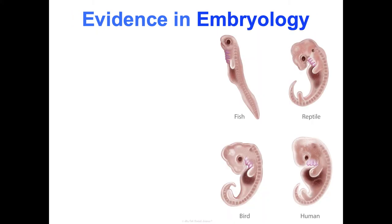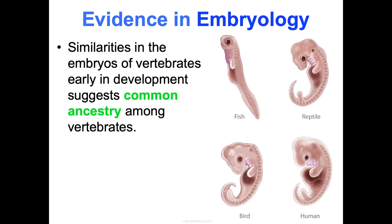Another interesting area is embryology. If we look at the embryos of vertebrates, we can see early in development how similar they look. This could also be evidence of common ancestry and relatedness among vertebrates — the similarities we observe in development. There's a fun demonstration of this that will be shown in class.